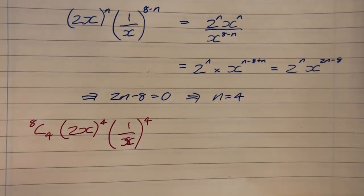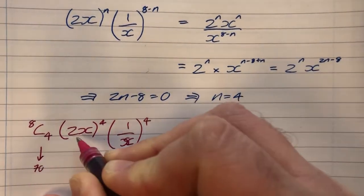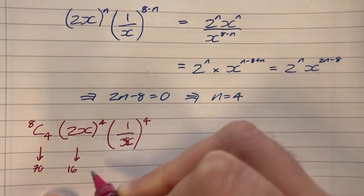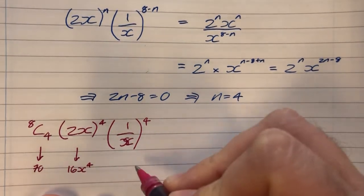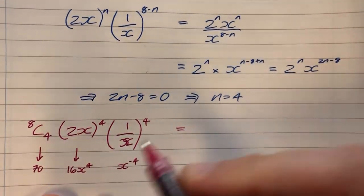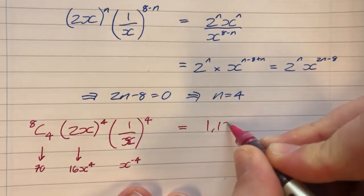So 8C4 is going to be 8 times 7 times 6 times 5, divided by 4 times 3 times 2. So that's the number 70. 2 to the 4, well, that's 16. Technically 16x to the 4. And this one, there's no constant in there except for the number 1. So that's just x to the minus 4. And we see we get 70 times 16, which is 1,120. So that's the constant term.